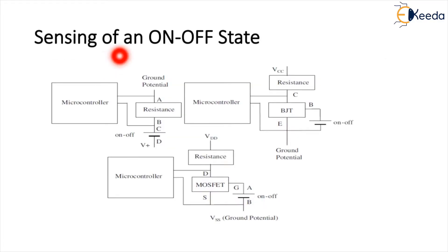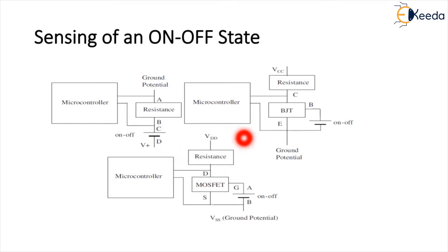For sensing an on and off state, this diagram will be helpful. It is attached to the microcontroller, which has a ground potential and is connected to a resistance with voltage, and then connected to a BJT bipolar junction transistor. There are four cases to consider: how to sense an on/off state, how a street light sensor senses ambient light, how a rotating wheel senses a specific orientation, and how a linearly moving part senses a specific linear position.